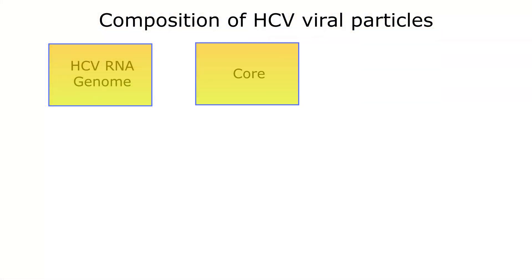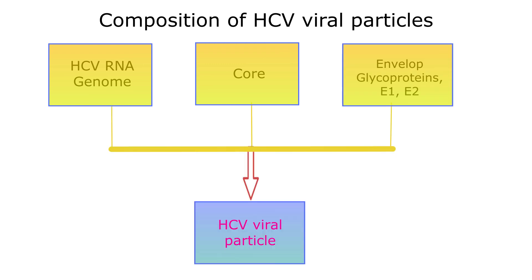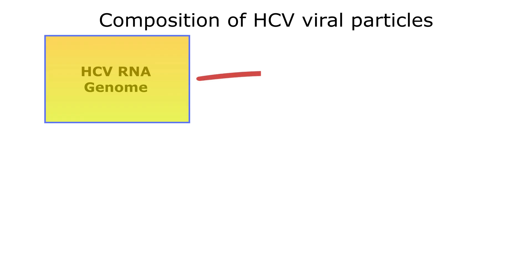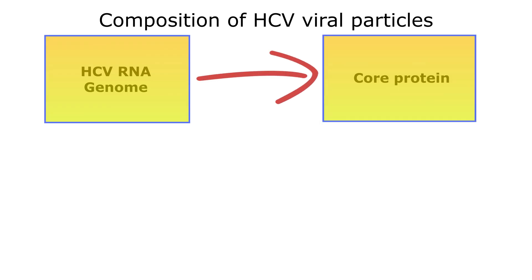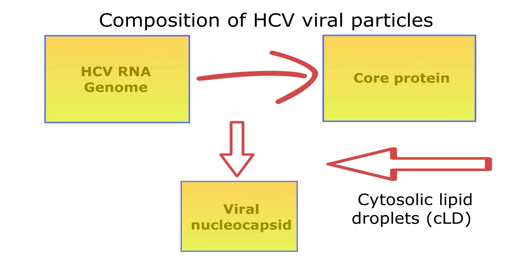The HCV viral particle includes the HCV RNA genome, core, and the envelope glycoproteins E1 and E2. The HCV RNA genome interacts with the core proteins to form the viral nucleocapsid in association with the cytosolic lipid droplets.